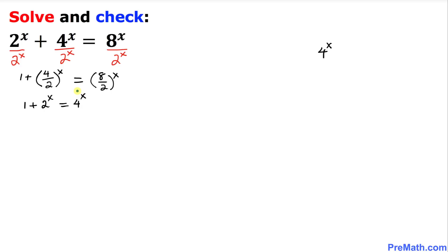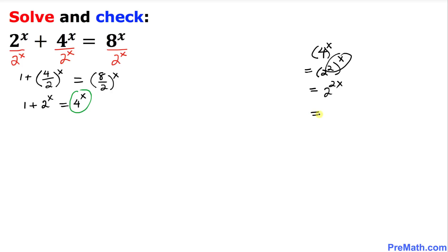Now in the next step I have just copied down this one right over here. Let's simplify that one — 4 can be written as 2 power 2, and then power x. And now we are going to use the rule of exponent: when you have two exponents you can multiply them out. So that is going to become 2 power 2x, and then once again I can write this one as 2 power x and then power 2.